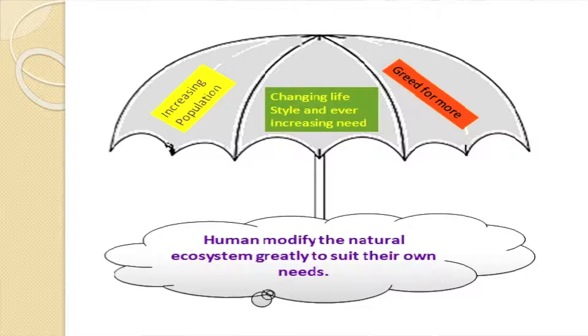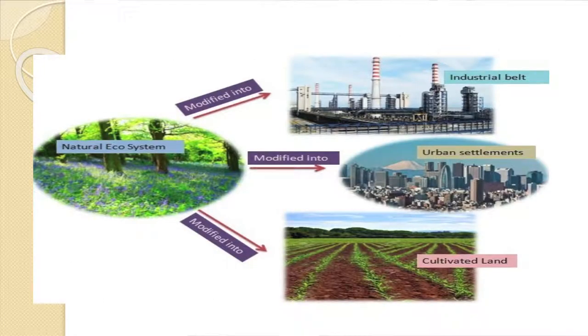Why did we need to modify our ecosystem so massively? There are basically three reasons: one is increasing population, then changing our lifestyles and over-increasing our needs, and of course, not to forget, greed for more. All these together have resulted in humans modifying their natural ecosystem to suit their needs. The major ways we have modified our natural ecosystem — which consisted primarily of green forests, vast seas, and waterways — are into industries, urban settlements, and agricultural fields where we cultivate our crops.